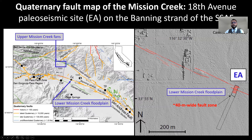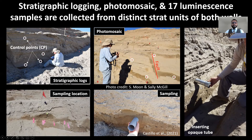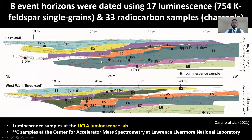Here, the quaternary fault map shows the lower Mission Creek floodplain deposits and the upper Mission Creek alluvial fan deposits, our two main study sites. We took advantage of a 250-meter-long and 8-meter-deep trench near 18th Avenue at North Palm Springs on the Banning Strand of the Southern San Andreas Fault, which exposed a 40-meter-wide fault zone. In these photos, Sally is recording paleo seismic information from the trench and Sulgi is collecting luminescence samples mostly from homogeneous sandy units. We collected a total of 17 luminescence samples from distinct marker horizons and also dated around 33 radiocarbon charcoal samples, with age analysis of 754 single grains processed at UCLA's luminescence laboratory.